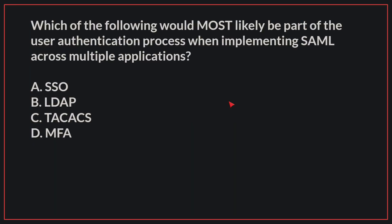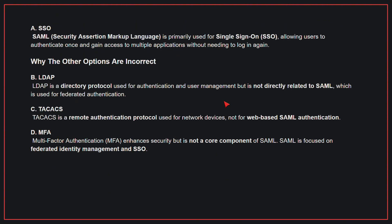Which of the following will most likely be part of the user authentication process when implementing SAML across multiple applications? The correct answer is A, SSO. SAML is primarily used for SSO, allowing users to authenticate once and gain access to multiple applications without needing to log in again.